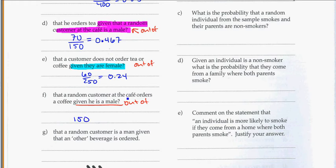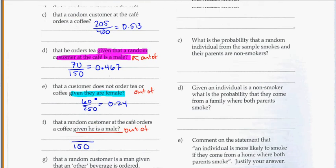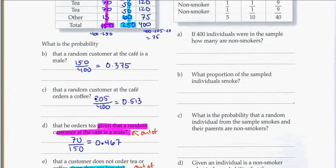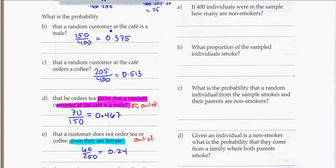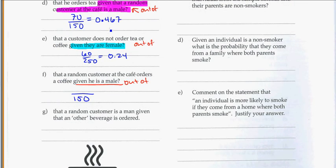What is the probability that out of those 150, he orders a coffee? So if we go back up here, coffees are 65. So 65 out of 150. And if you put that into your calculator, you should get 0.433.